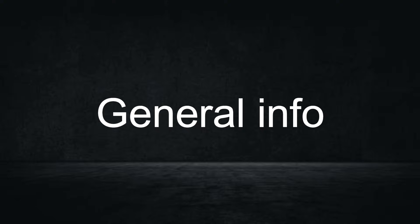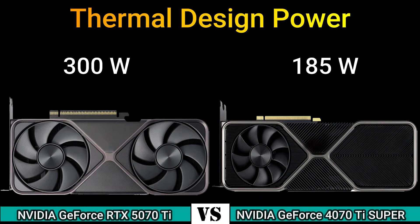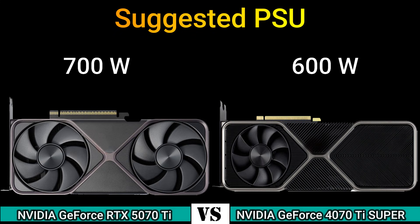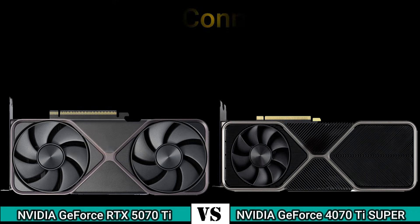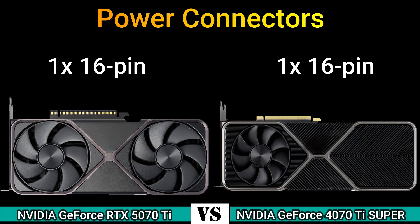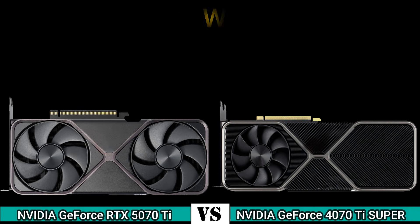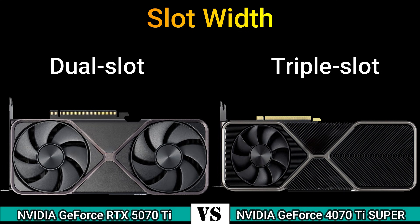Thermal Design Power: 300W and 185W. Suggested PSU: 700W and 600W. Outputs: 1x HDMI 2.0b, 3x DisplayPort 2.0 NV and 1x HDMI 2.0b, 3x DisplayPort 1.4a. Power connector: 1x 16-pin. Slot width: Dual Slot and Triple Slot.